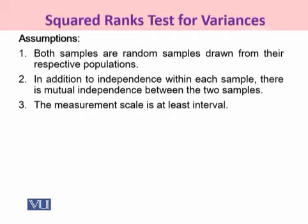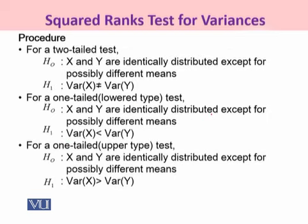The assumptions for the scored rank test for equality of variances are: (1) both samples are random and drawn from their respective populations; (2) independence within each sample is required, with mutual independence between the two samples; and (3) the measurement scale is expected to be at least interval. The procedure allows us to test the equality of variances or test directional relationships — less than or greater than.